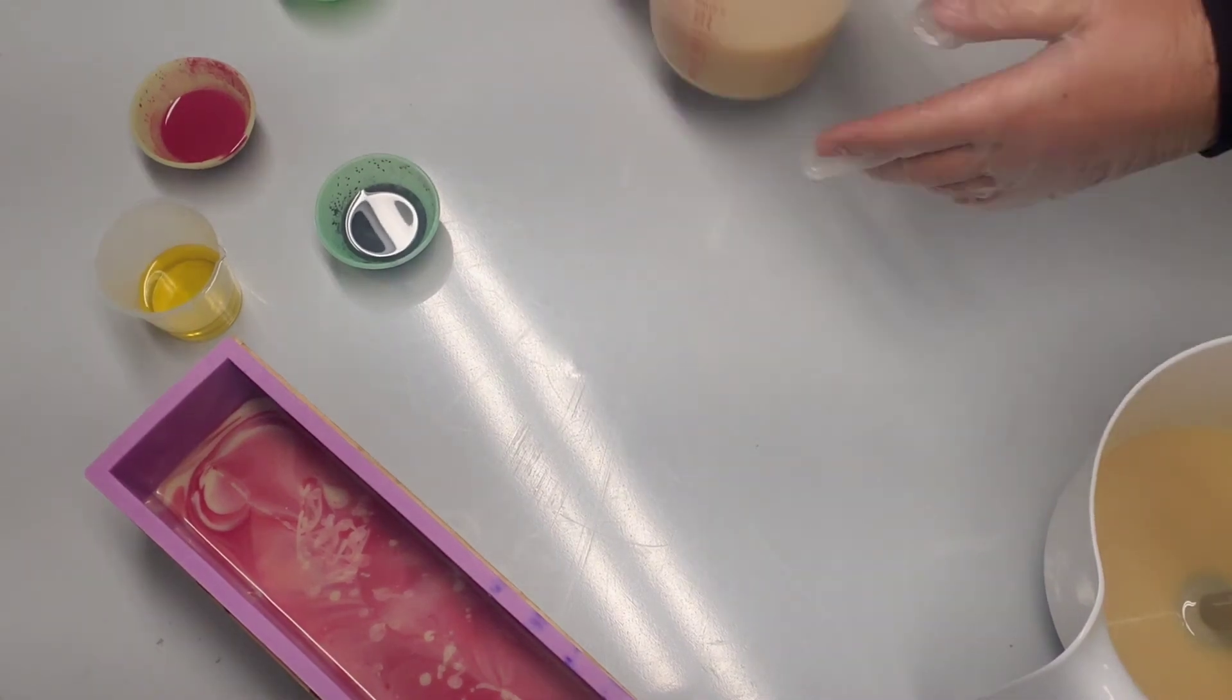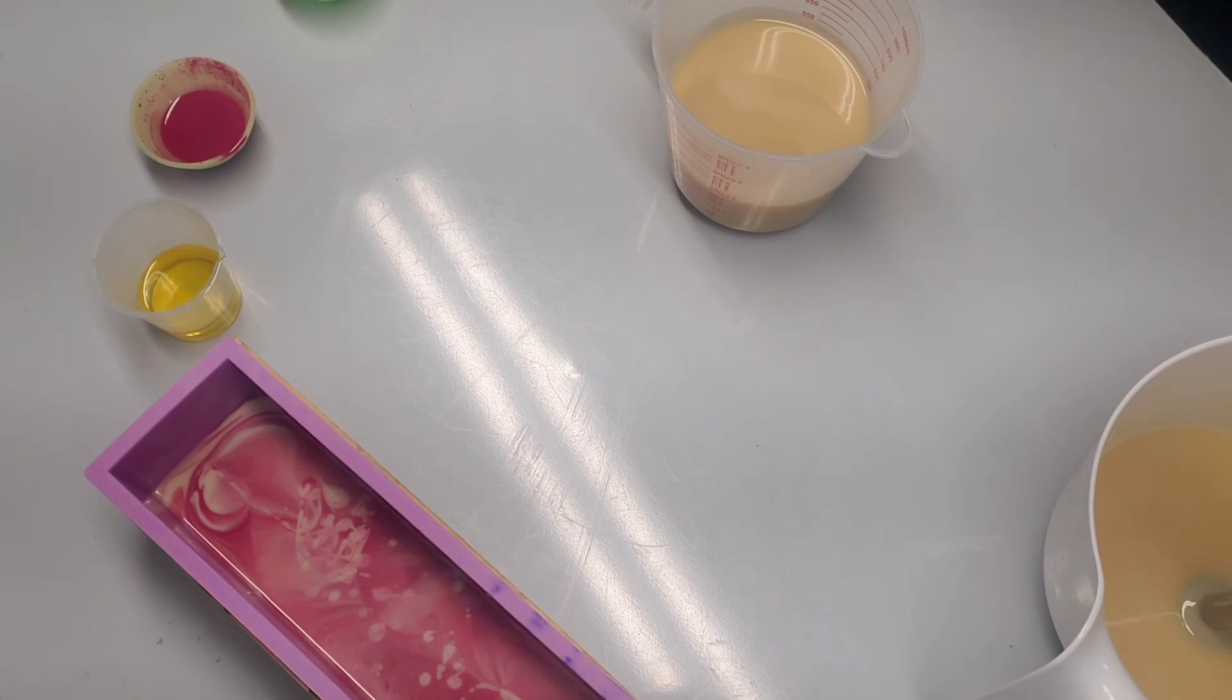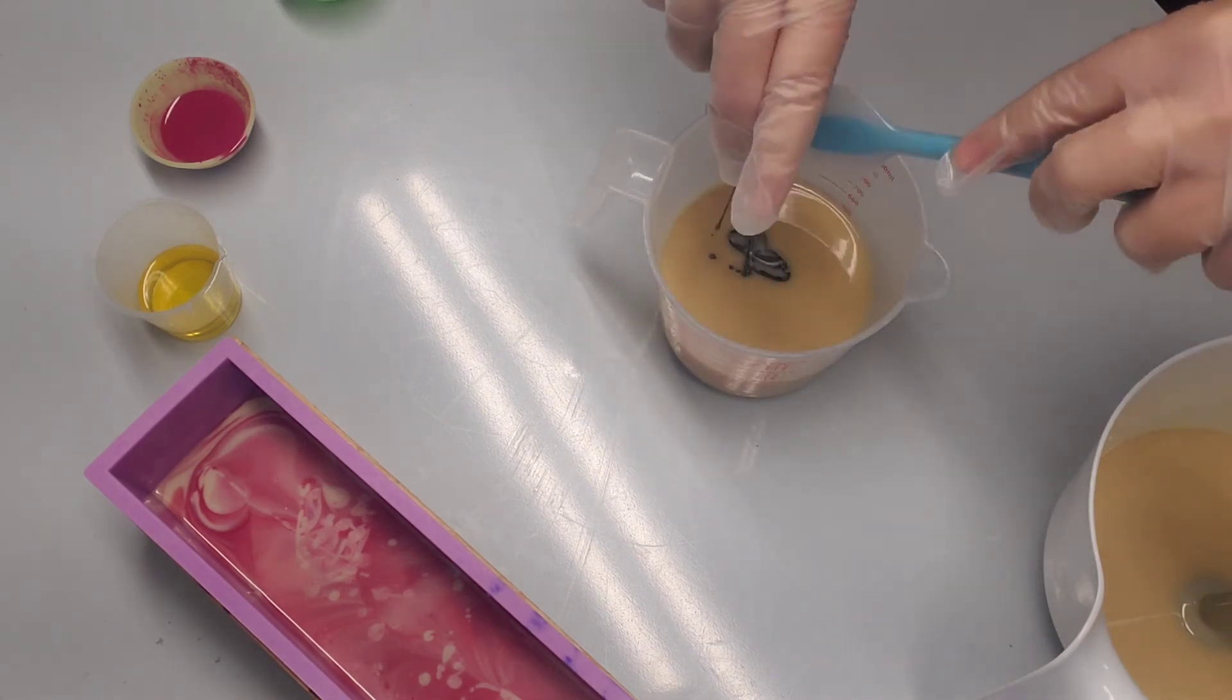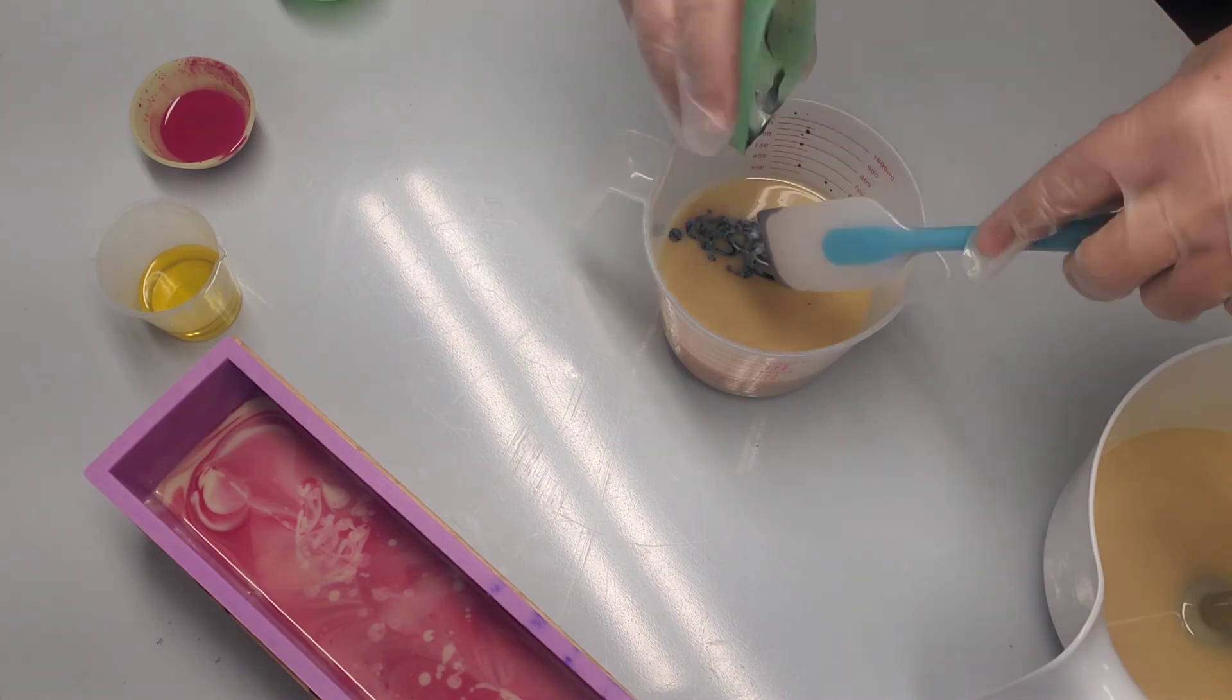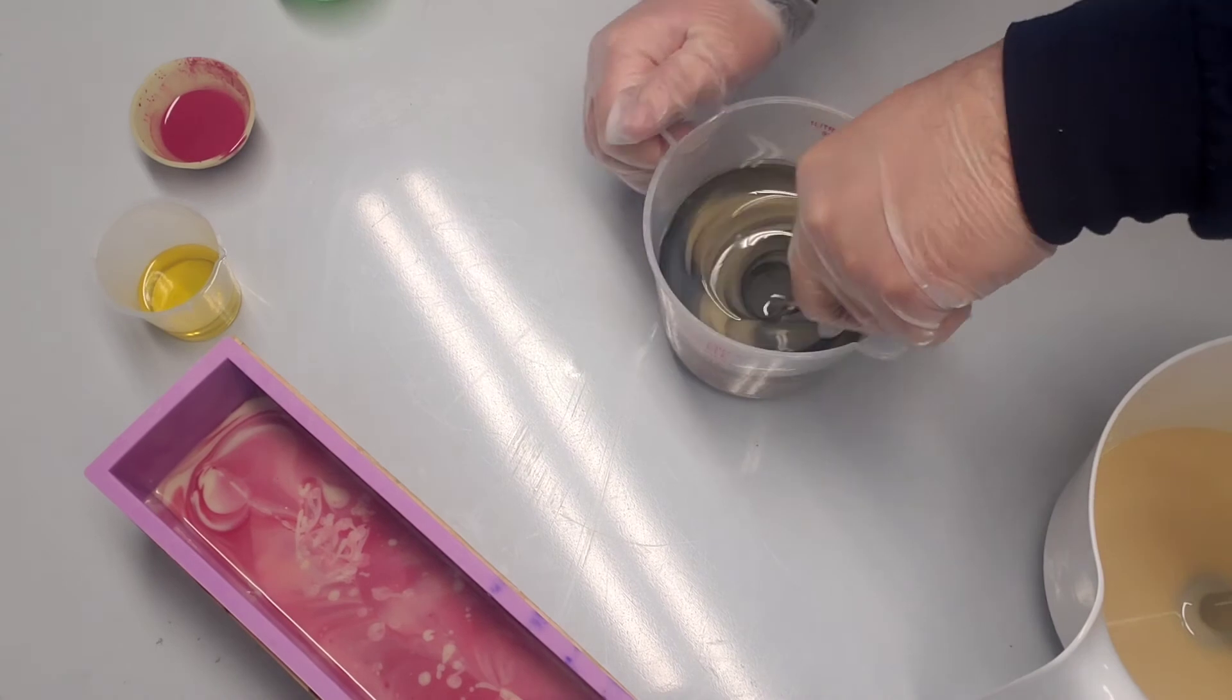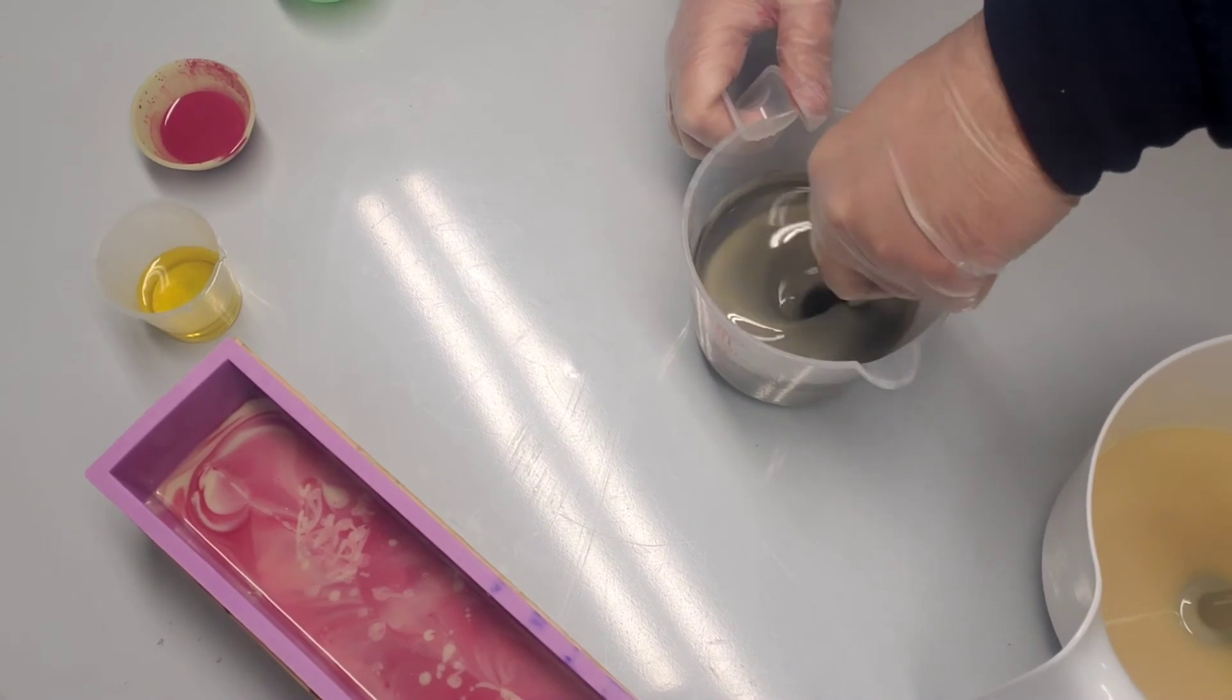The last one will be only pink color, and we'll texture the top and have the embed on top as well - the hearts. This is the silver mica.